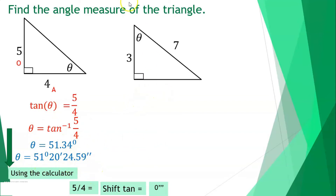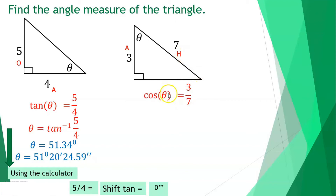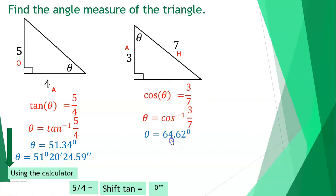Another example: with 3 as adjacent and 7 as hypotenuse, use cosine. cos(theta) = 3/7, so theta = arccos(3/7). Using the calculator: theta ≈ 64°37'23.04''.